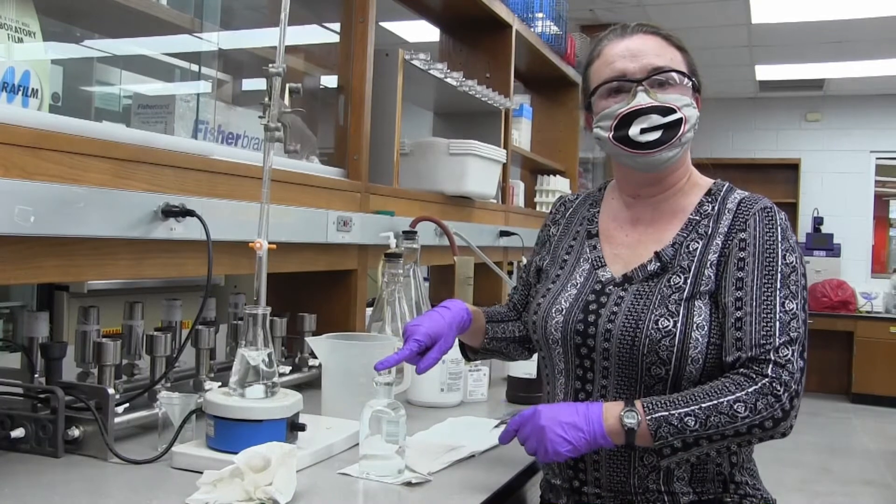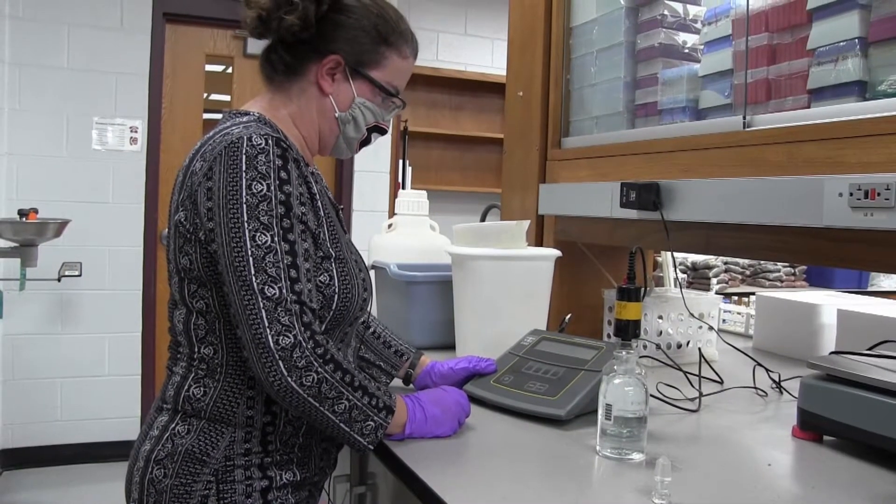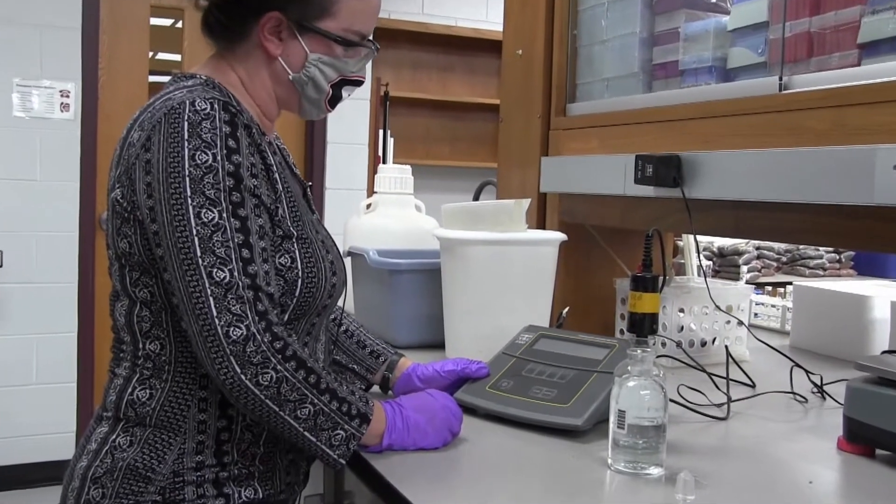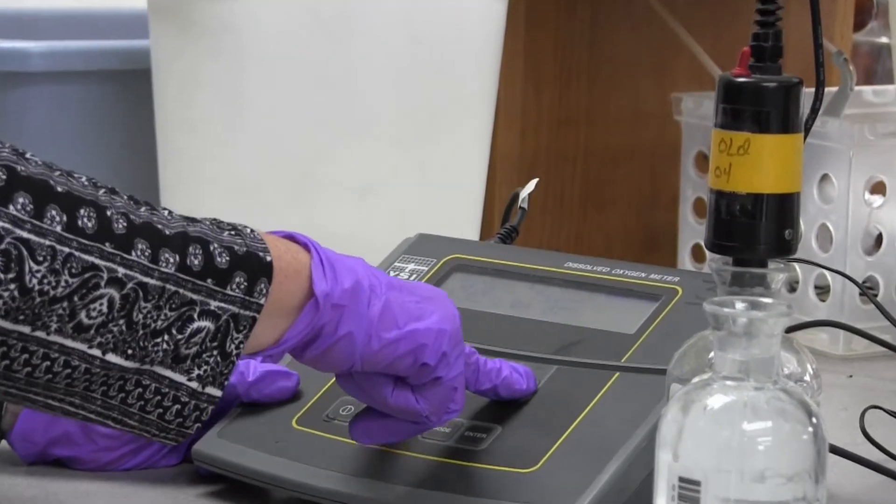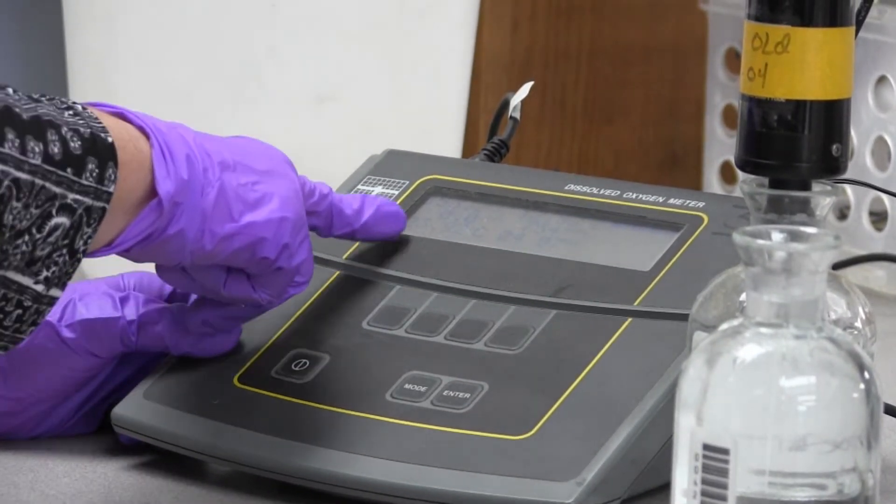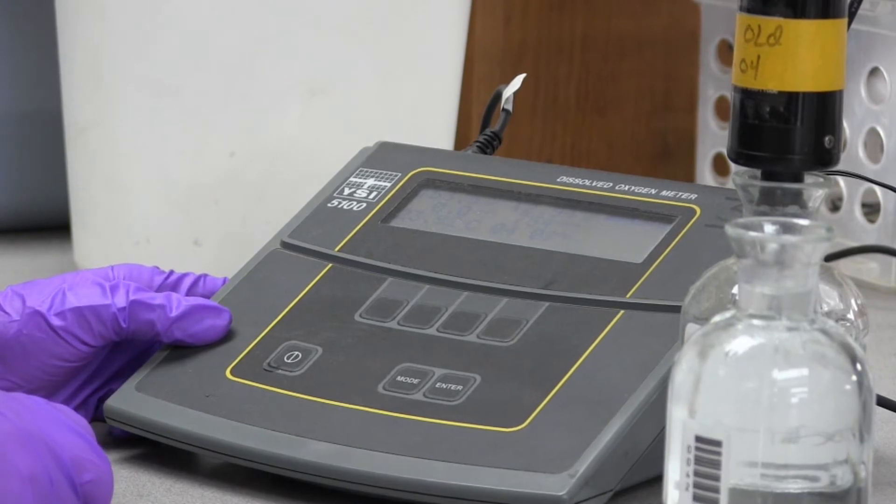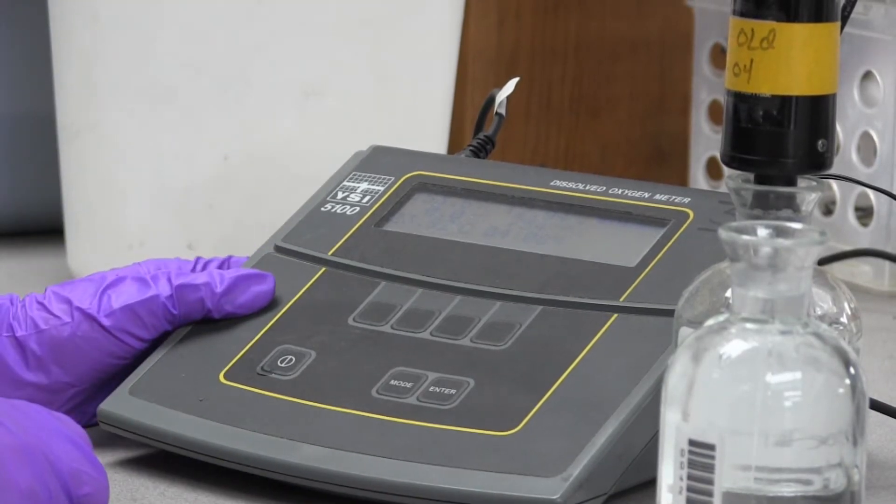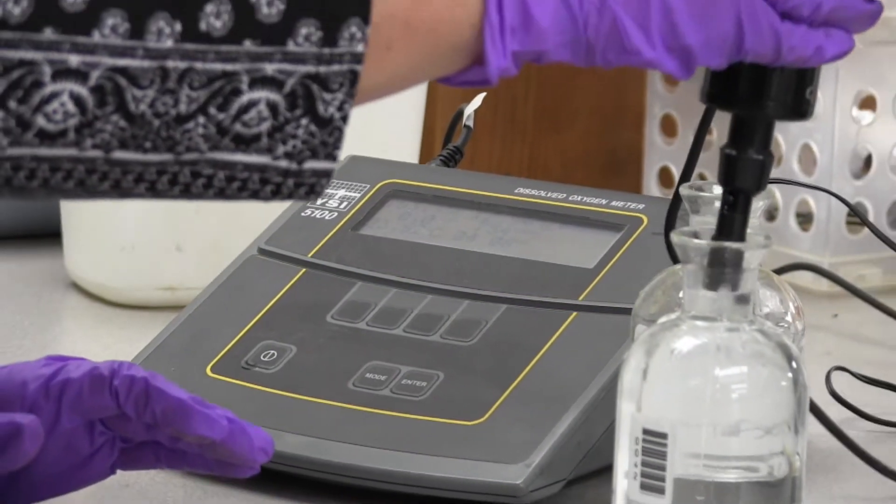I'm ready to take this one over to the DO meter. First of all, I've already turned the meter on. This is our YSI dissolved oxygen meter. I'm going to press calibrate. It does have a soft key for auto cal and you could just press that and carry on with your test. Since we did the Winkler method, we're going to manually enter that number in that we just titrated.